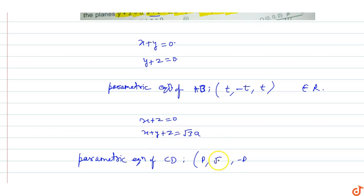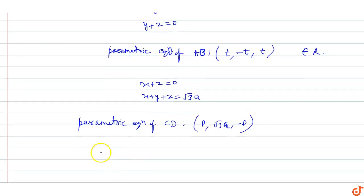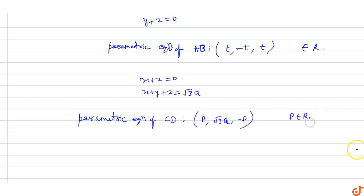From the plane x+y+z=√3a, we get y = √3a. So we now have the parametric coordinates of both lines AB and CD, and we want to find the shortest distance between these opposite edges of the tetrahedron.